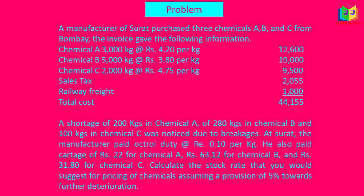There was a shortage due to breakage. At Surat, the manufacturer paid octroi duty at Rs 0.10 paise per kg. He also paid cartage of Rs 22 for chemical A, Rs 63.12 for chemical B, and Rs 31.80 for chemical C. The problem asks us to calculate the stock rate for pricing of chemicals, assuming a provision of 5% toward further deterioration.